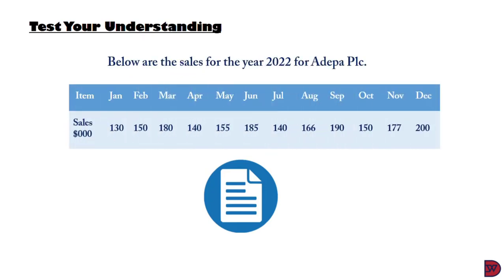Let's test our understanding. Below are the sales for the year 2022 for Adepart PLC. January: $130,000; February: $150,000; March: $180,000; April: $140,000; May: $155,000; June: $185,000; July: $140,000; August: $166,000; September: $190,000; October: $150,000; November: $177,000; December: $200,000.